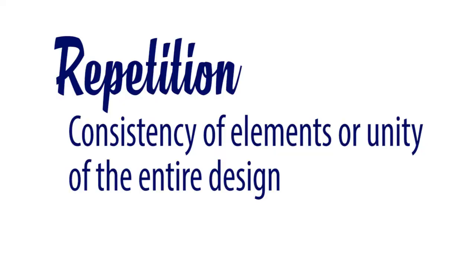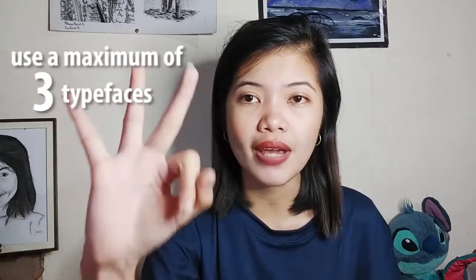Sixth is repetition — the consistency of elements or unity of the entire design. When choosing typefaces, colors, or even alignment, be consistent. Don't keep changing them. As much as possible, use a maximum of three font styles or typefaces — maximum. Don't go beyond three. If you use too many typefaces and colors, you will overwhelm your audience. They will get confused and the content will feel too complicated. Unless you're making a collage, don't mix everything up. You are supposed to create text-based content, not a database of typefaces.